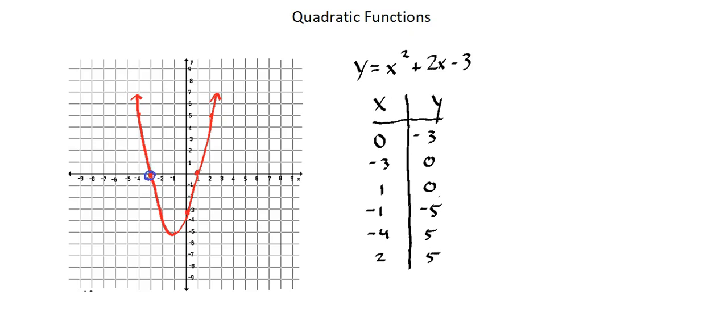First, we'll note the x-intercepts. There are two. Sometimes there are two, sometimes there is one, sometimes there aren't any. We also have a y-intercept. There will always be one and only one y-intercept.